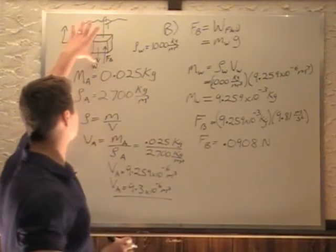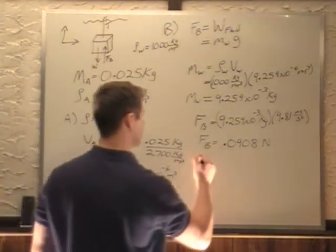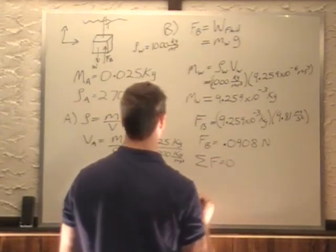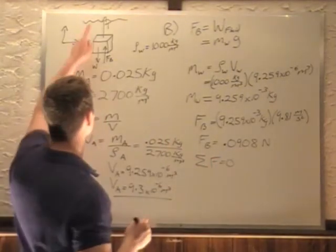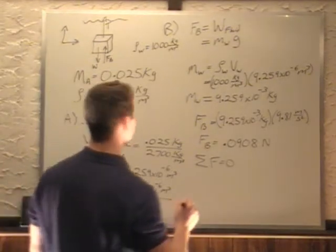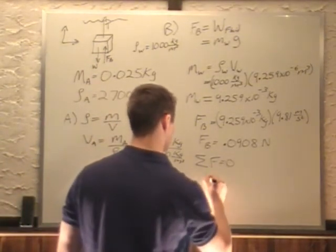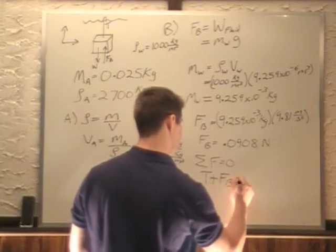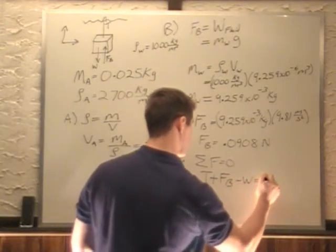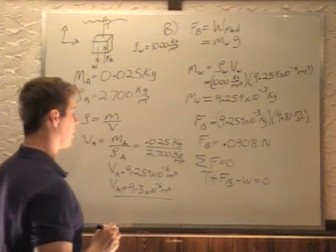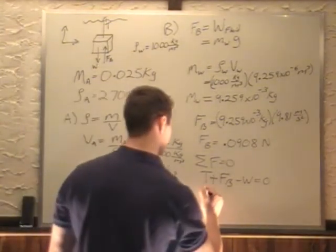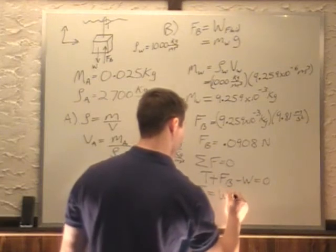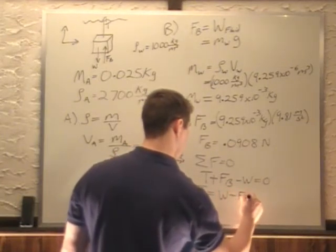All we have to do now is take a sum of these forces. Sum of those forces equals 0. We have tension and buoyancy force in the positive, and weight in the negative. Tension plus buoyancy force minus weight equals 0. We're trying to figure out tension. Tension equals weight minus buoyancy force.